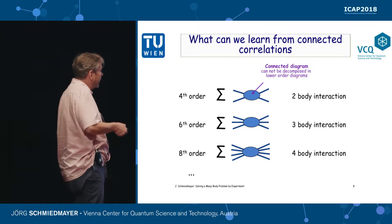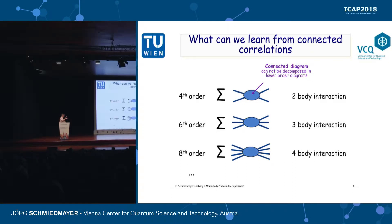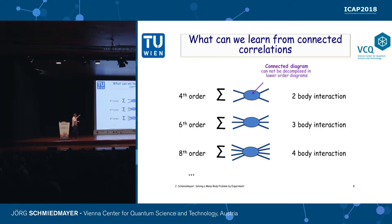For the sixth-order correlator, it's the sum of all diagrams I cannot build from two second-order diagrams or a fourth-order diagram — so it's genuine three-to-three interactions. If I take a system which has only two-body interactions, quantum corrections automatically give me all these other higher-order corrections. These are genuine quantum effects in the many-body system.